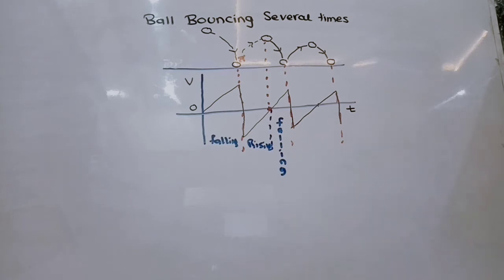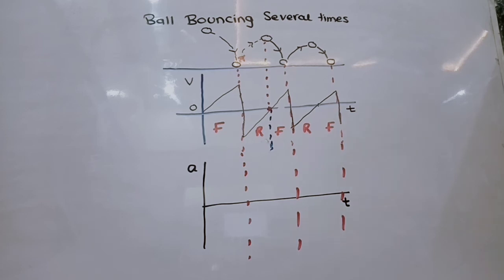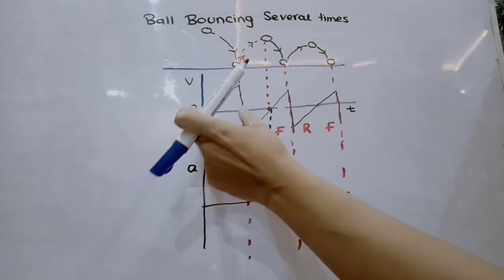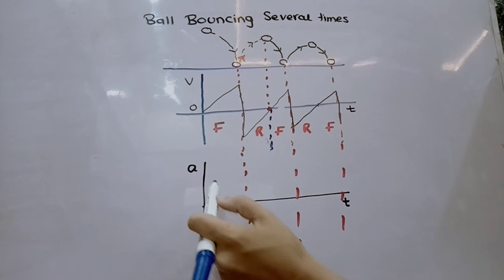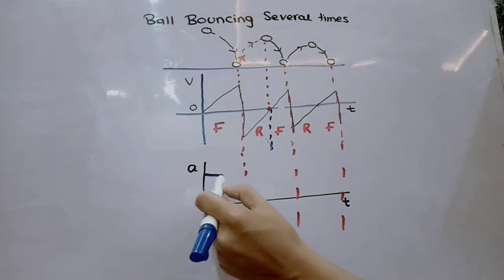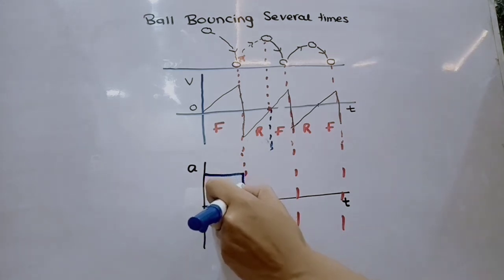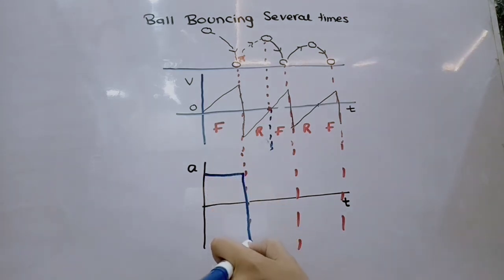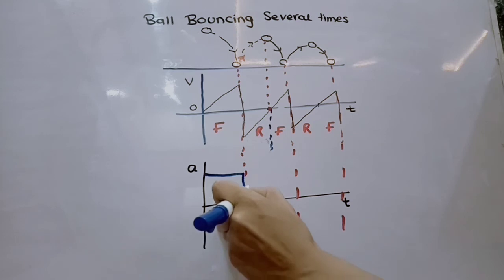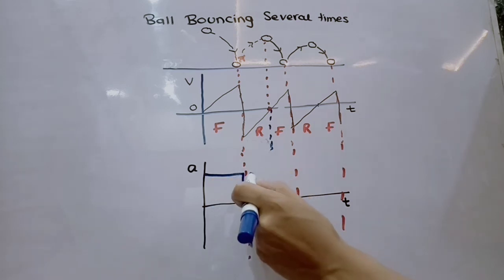After this, we discuss the acceleration-time graph. For the acceleration-time graph, we can clearly see the acceleration is constant. In this interval it's falling with constant acceleration. But during this impact, there would be a surge just like this, and the same acceleration continues.